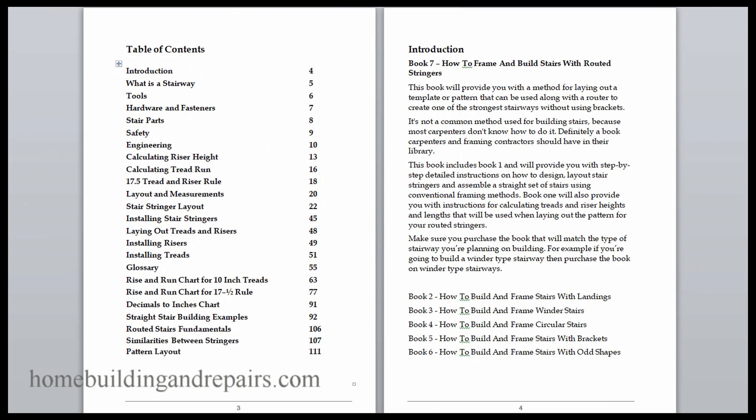Now let's see what's inside the book. You will get book number one. It is included in here, and book number one basically takes up about this much of the book. It provides you with how to figure out the riser height, your tread run, gives you some layout ideas.